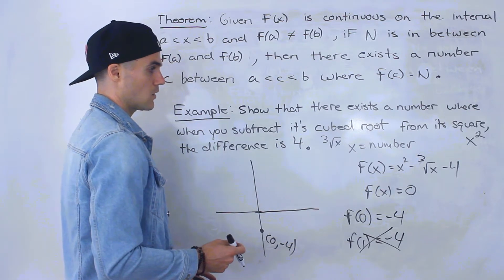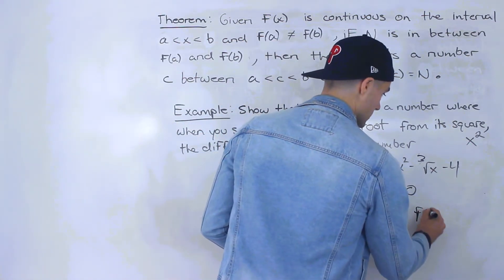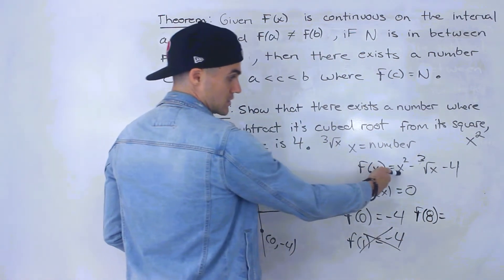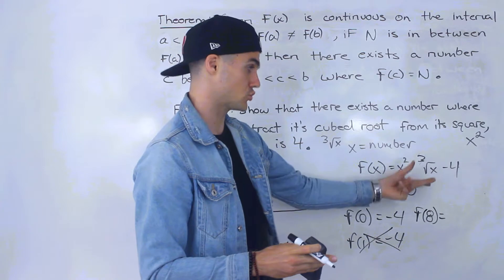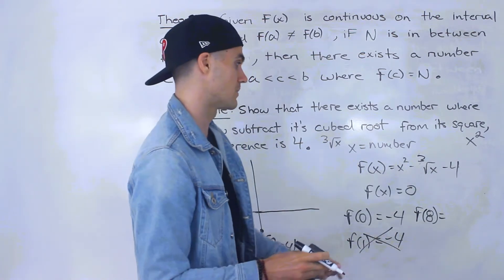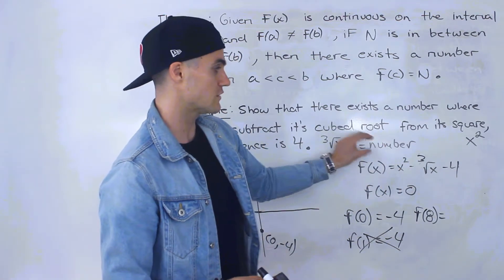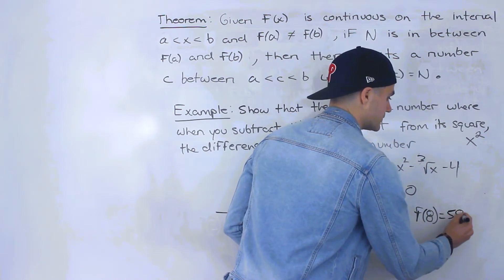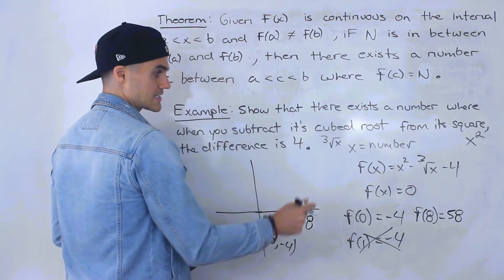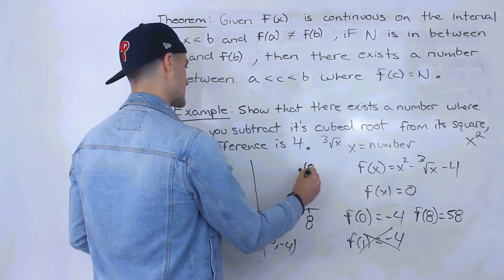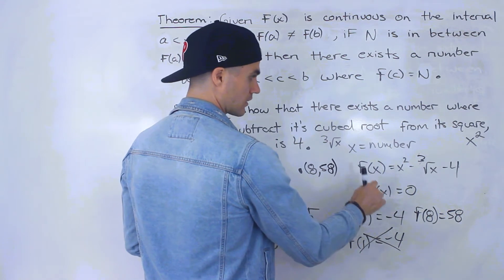Let's try x = 8, where the cube root will be clean. Eight squared is 64, and the third root of 8 is 2, so we get 64 minus 2 minus 4, which equals 58 — a positive y value. So f(8) = 58, which is what we want.